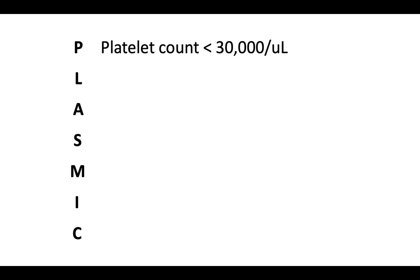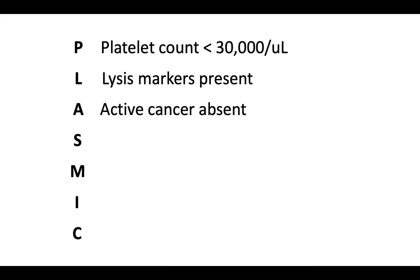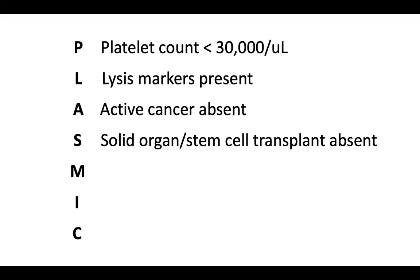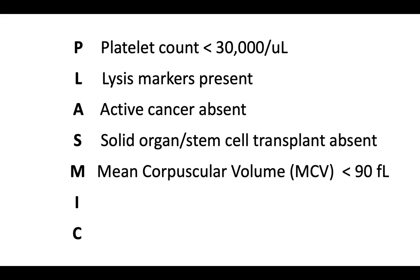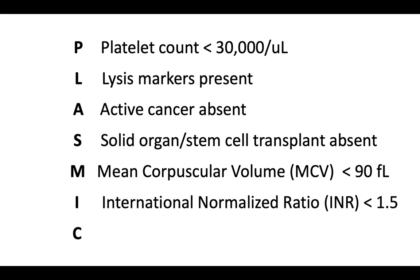The likelihood of severe ADAMTS-13 deficiency in adults with suspected TTP can be estimated using the PLASMIC score, which helps estimate the pretest probability of TTP. The letters stand for: P — platelet count less than 30,000; L — presence of lysis or hemolysis markers, defined as reticulocyte count greater than 2.5%, undetectable haptoglobin, or indirect bilirubin greater than 2 mg/dL; A — absence of active cancer; S — absence of solid organ or stem cell transplant; M — mean corpuscular volume (MCV) less than 90; I — international normalized ratio (INR) less than 1.5; and C — creatinine less than 2.0 mg/dL.